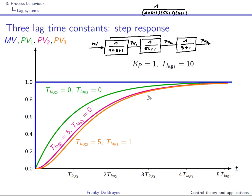If you consider the step response of this third order lag system, not only will the slope be zero at the origin but also the second derivative will be zero. This is why the step response becomes more flat at the origin, introducing this apparent dead time I've spoken about. Note that you can see the response in magenta as the response of a first order system with time constant 5 seconds to the input shown in green. Similarly, the response in orange can be seen as the response of a first order system with lag time constant 1 second to the input shown in magenta.